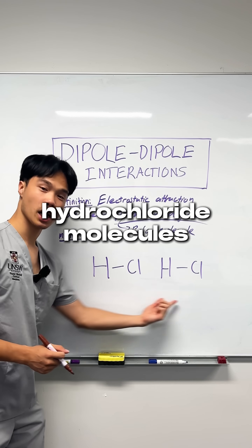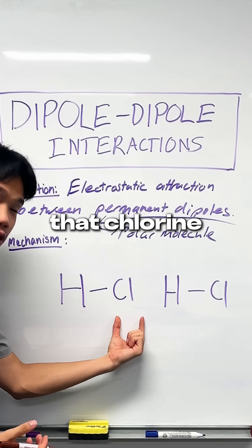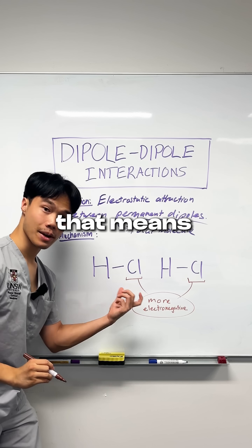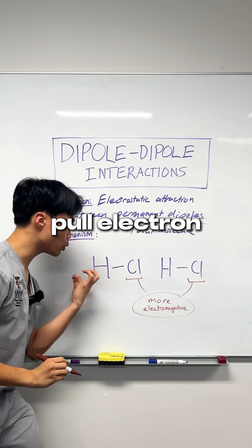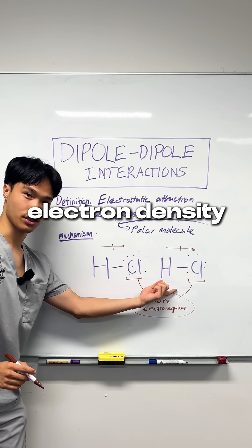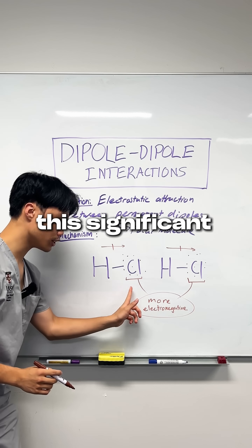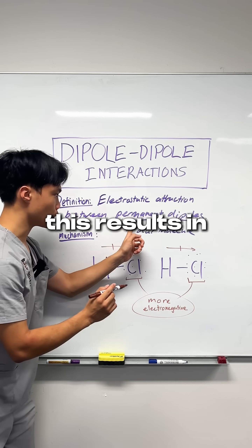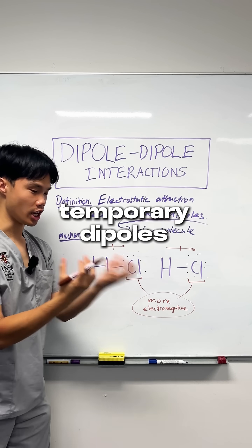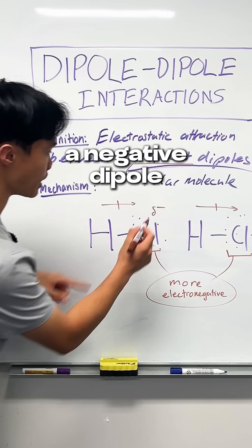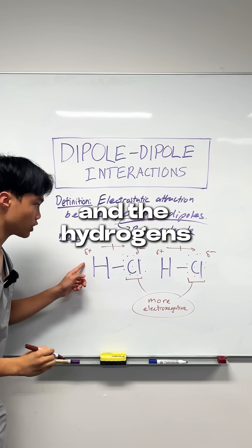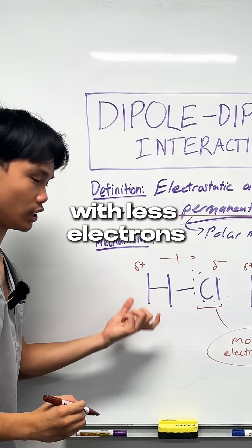Take the example of two hydrogen chloride molecules. We know from the Pauling scale that chlorine is a much more electronegative element compared to hydrogen. That means the chlorides are going to pull electron density towards themselves, and the hydrogen will be left with less electron density. Because of the significant electronegativity difference, this results in a permanent dipole, which is different to dispersion forces, which are just temporary dipoles. With more electrons around them, the chlorides gain a negative dipole, and the hydrogens gain a positive dipole, with fewer electrons around them.